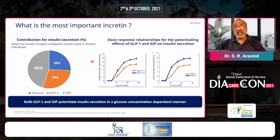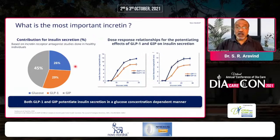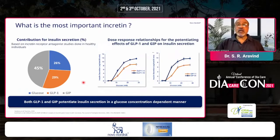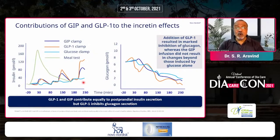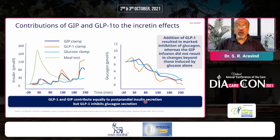What is contributing to insulin secretion? Based on incretin receptor antagonist studies done in healthy individuals, it is very clear that 26% of insulin comes from the food eaten, 45% is from GIP, and 29% from GLP-1. Many people ask why GIP, which potentiates insulin production to the extent of 45%, is not being used and why GLP-1 is being used instead. The answer is that both GLP-1 and GIP contribute equally to postprandial insulin secretion, but unfortunately GIP does not inhibit glucagon secretion, which GLP-1 does — and that's the main reason.